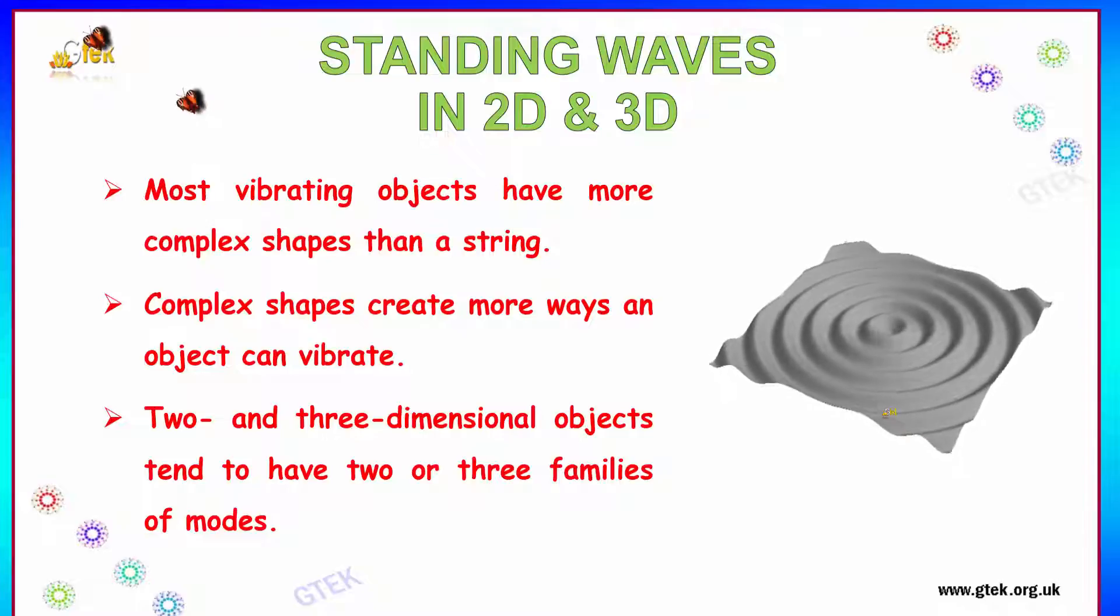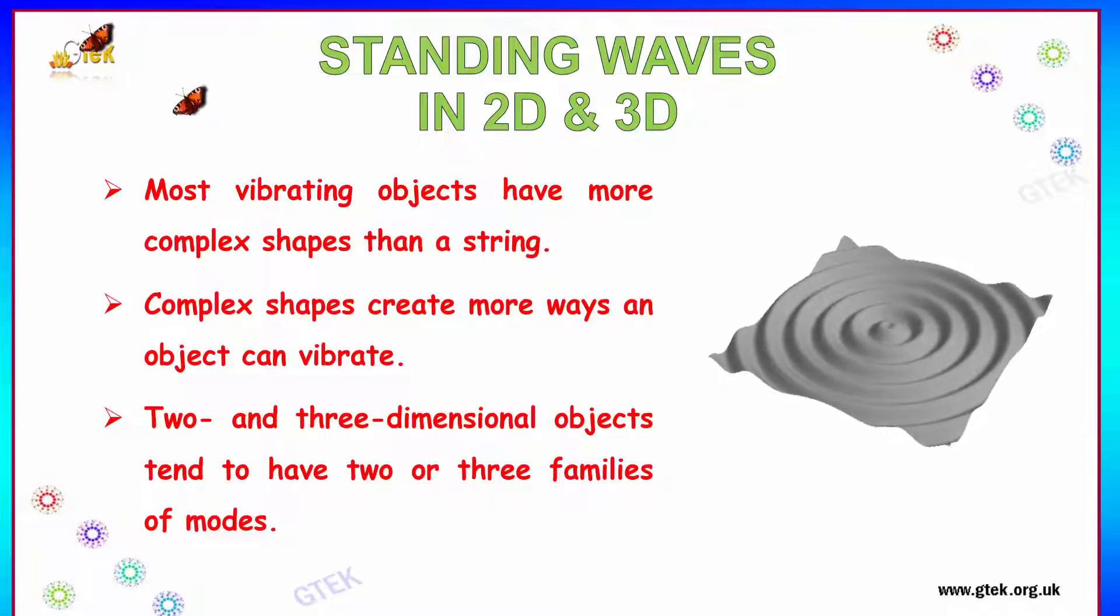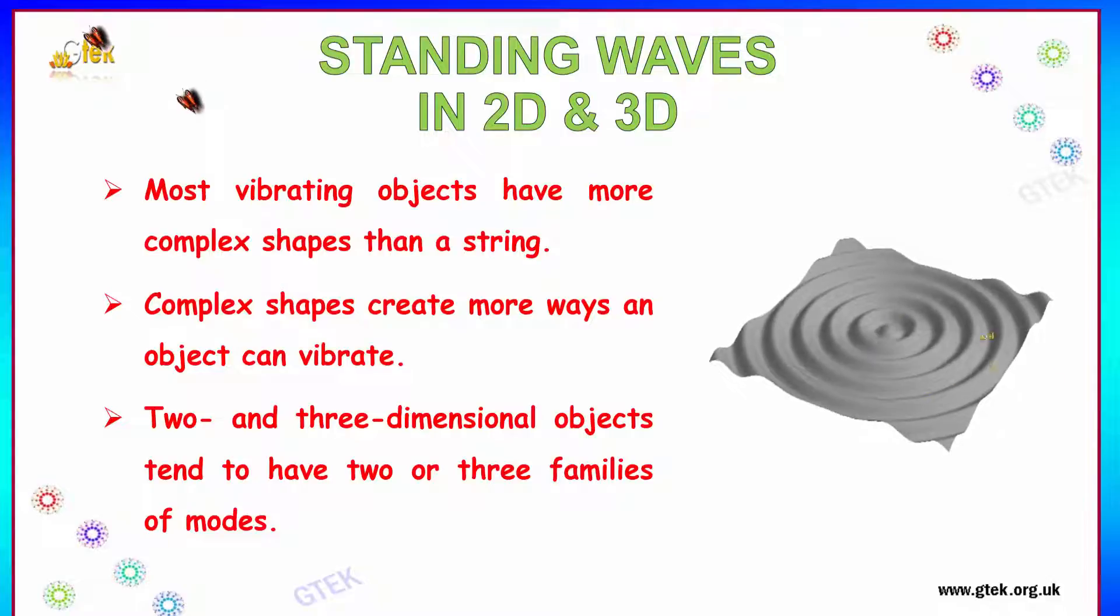Let us see about standing waves in 2D and 3D. Most of the vibrating objects have more complex shapes than a string. Complex shapes create more waves as an object can vibrate. Two and three dimensional objects tend to have two or three families of modes. You can see some examples of standing waves in 2D.